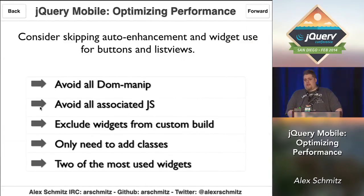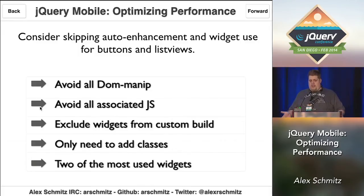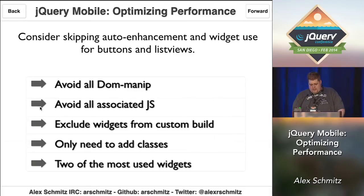Another thing you can do to improve performance is consider not using auto-enhancement for things like buttons and list views. You can avoid even the DOM manipulation of adding those classes — since all we're doing is adding classes, you can do that yourself in your markup, and you can exclude those widgets from your custom build. It's a really simple thing that will really improve performance on a lot of apps.